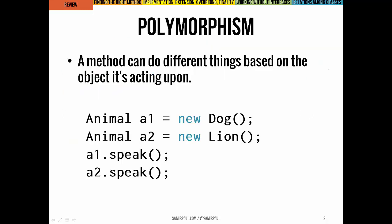As an example, if we make a new Dog instance and a new Lion instance and point animal variables at them, speak is an animal method. When we call speak, Java will look for the correct version to call — in this case for the Dog or for the Lion — and call that version. Though we're using the same method, two different things happen: roar or woof.